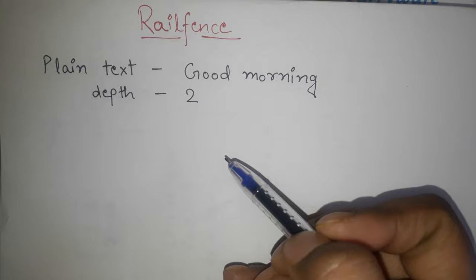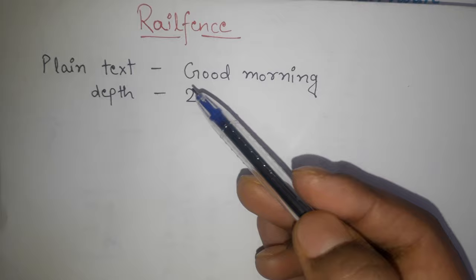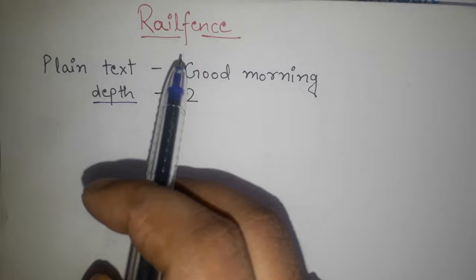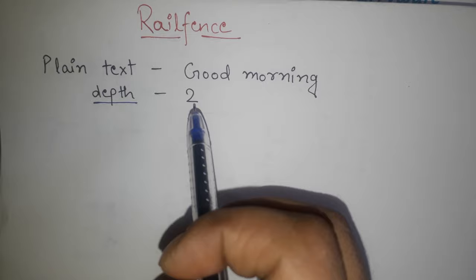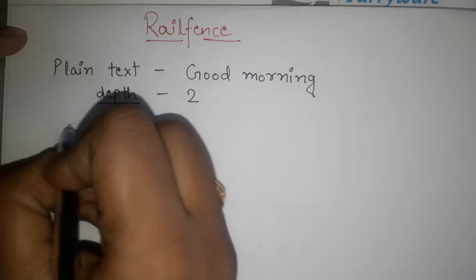But in this case what will be given is plaintext will be given, and with it a parameter called depth is given. Railfence means encryption or decryption where depth is needed. So plaintext and depth is given. In this case we have given the ciphertext. For example, plaintext is good morning and depth is given as 2. So how do we reveal the ciphertext?